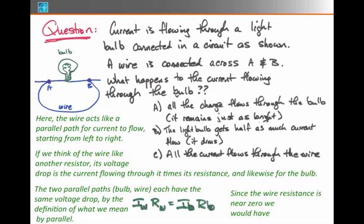Since the wire resistance is nearly zero, we would expect that the light bulb current would be nearly zero, because the only way to have my original equation hold true when the wire resistance is zero is to have the light bulb current equal zero. Therefore, the light bulb essentially extinguishes.